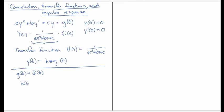As above, a little h of t that you get from this case is going to be equal to the inverse transform of 1 over as squared plus bs plus c. And this is given the name impulse response.